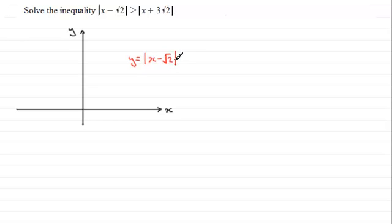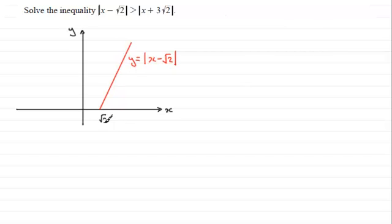Without the mod sign this would be a linear function — a straight line with gradient 1 and it would intercept the y-axis at minus root 2. Because we've got a mod sign, the line comes down, intersects the x-axis at root 2, and instead of carrying on downward it's reflected upwards. This point where x is zero gives y equal to root 2, since mod of negative root 2 is positive root 2.